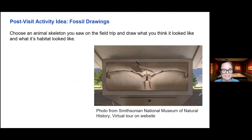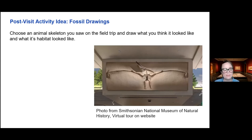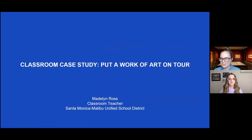Here's an example of a post-visit activity revisiting dinosaur bones and skeletons. I took a screenshot from the Smithsonian National Museum of Natural History's virtual online tour. You could have students choose an animal skeleton or a dinosaur or a fossil and draw what they think it would look like if it were alive — and also draw the habitat around it based on things they learned about during the trip. This activity could work for all grades, older or younger. Now I want to give Madeline some time to share another post-visit activity.